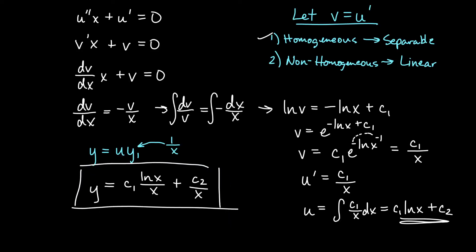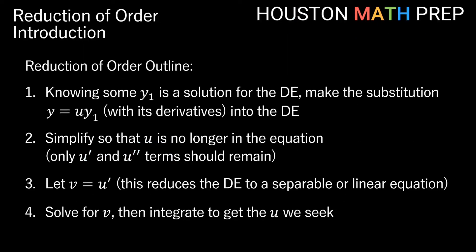Here's a summary outline of the method. For reduction of order: if you know y1 is a solution, make the substitution y equals u times y1. Find y prime and y double prime using the product rule, and plug everything into the differential equation. Simplify — you should find all u terms reduce to zero, leaving only u prime and u double prime terms. Let v equal u prime to reduce to a first-order equation: separable if homogeneous, linear (use integrating factor) if non-homogeneous. Solve for v, then integrate to get u, and multiply by y1 for the full solution.